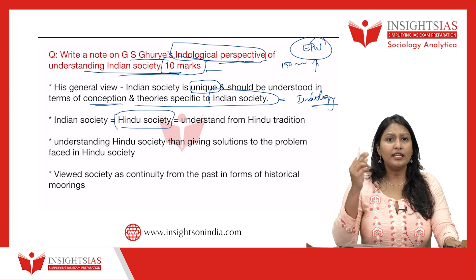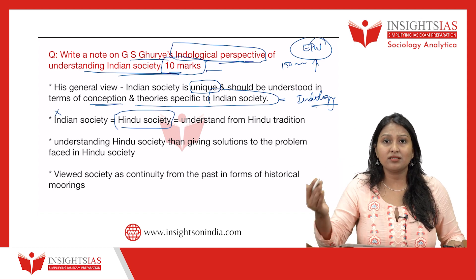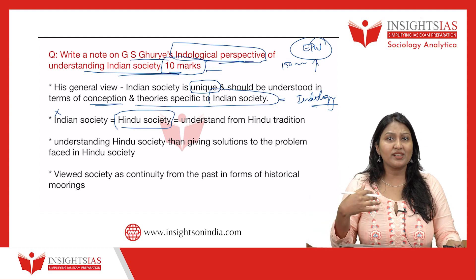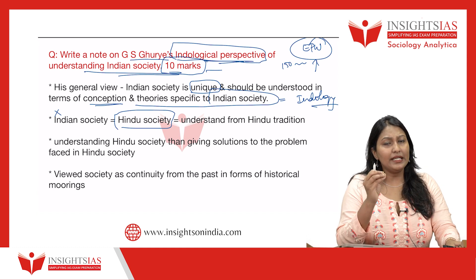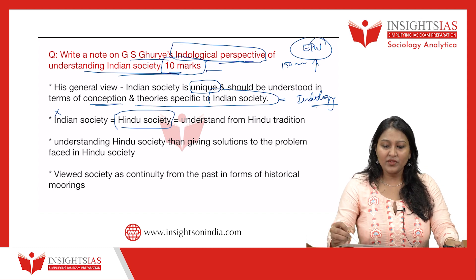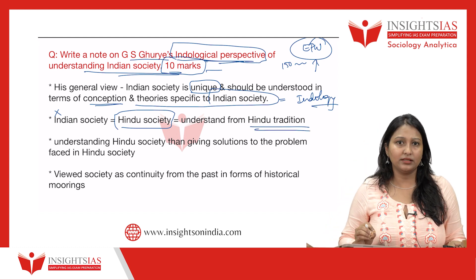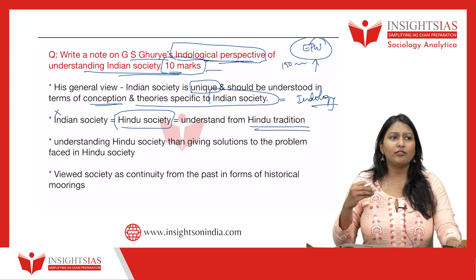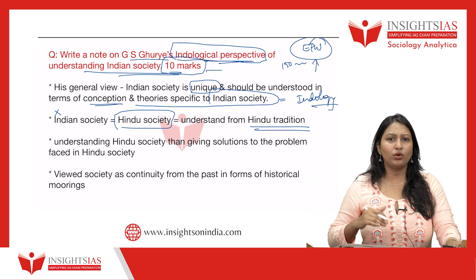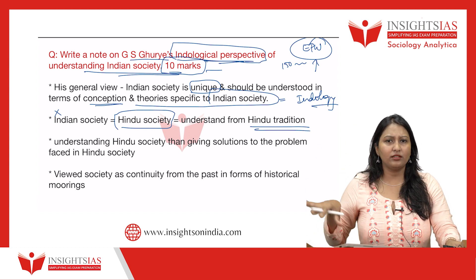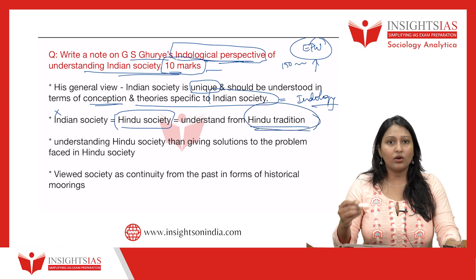According to Ghurye, Indian society is essentially Hindu society. In many of his texts he doesn't even use the term 'Indian society' — he uses 'Hindu society.' When he uses the word Hindu society, he actually means Indian society itself. He argues that in order to understand Indian society, we need to understand Hindu tradition first, because cultures — Christian, Muslim, tribal — have all been assimilated into the Hindu fold.